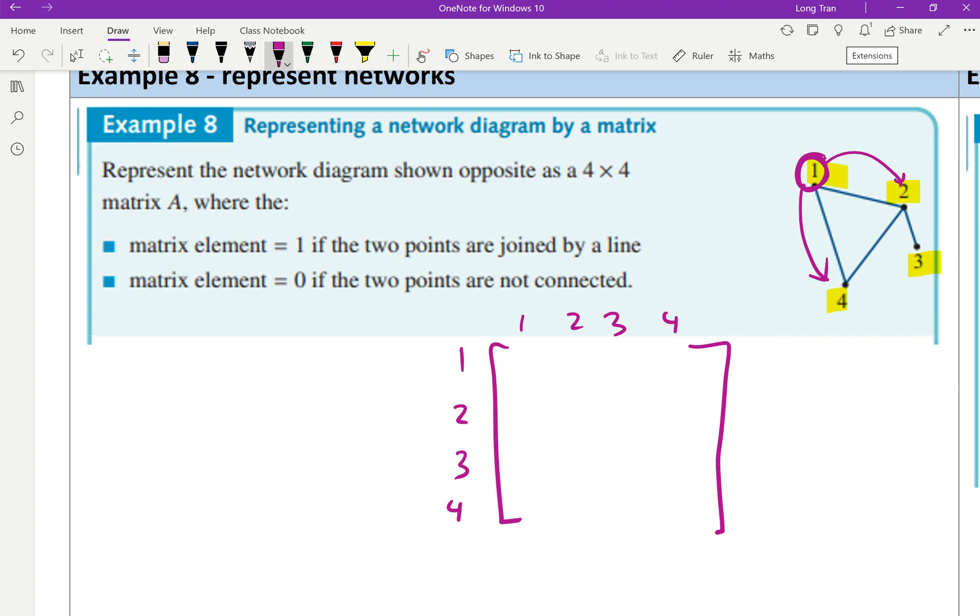Obviously one is connected to both two and four, and you can see that two is connected with four, one, and three. When they say one if the two points are joined by a line, well I know that one and one aren't joined by a line, but one and two is definitely joined by a line. So I would use one. One is not joined to three, one is joined to four, so I would write one. So you can see that by putting zero, one, zero, one, this means there is a connection between one and two, and one and four.